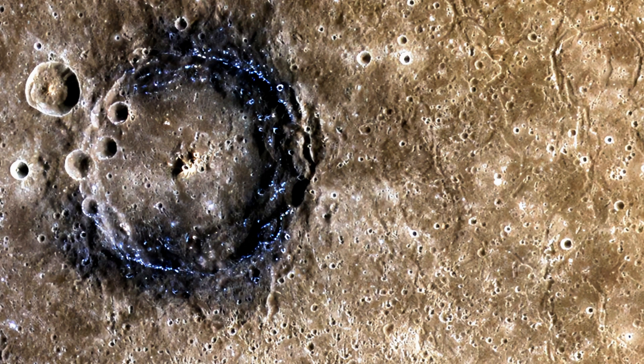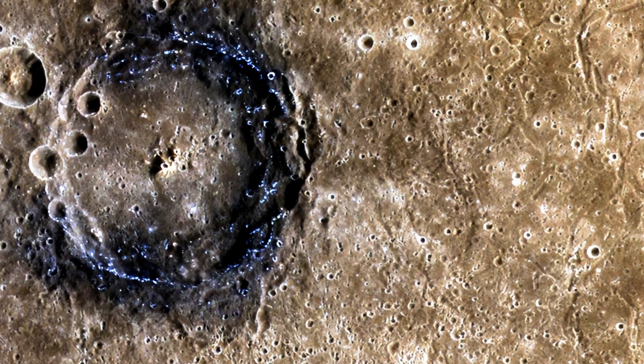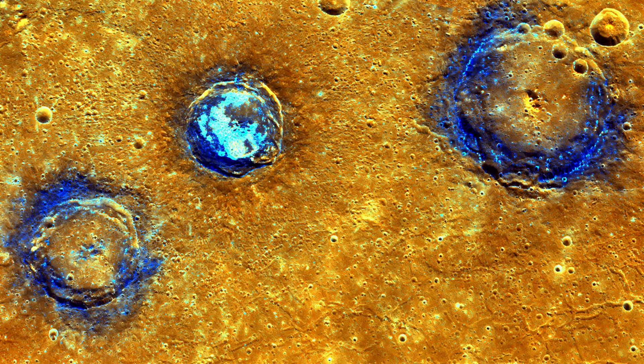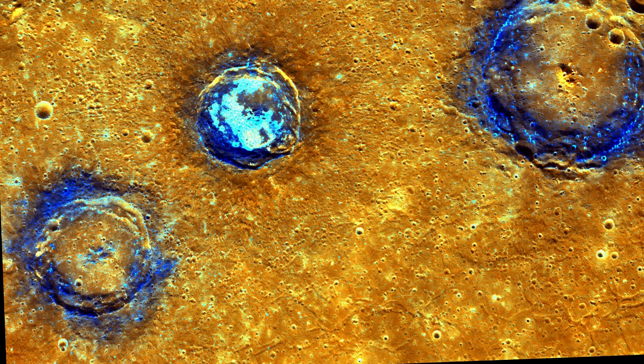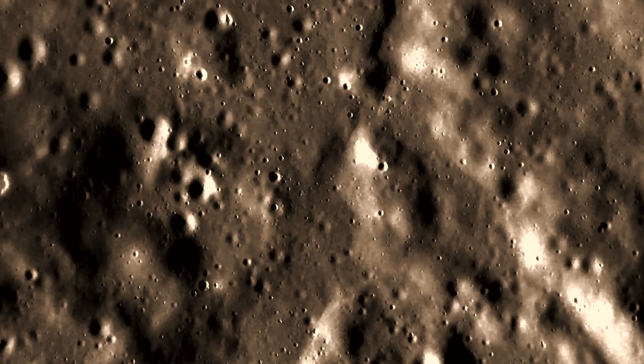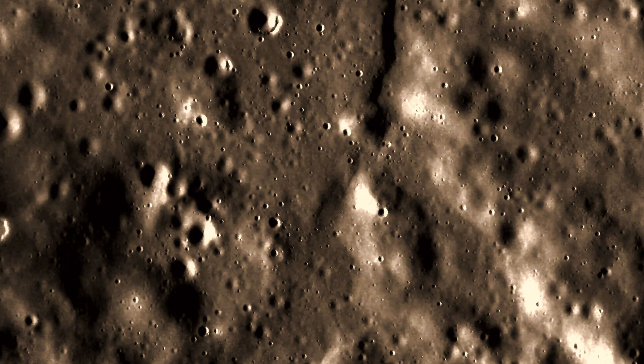NASA's MESSENGER spacecraft uncovered peculiar hollows scattered across Mercury's surface. Orbital images revealed thousands of irregular depressions, marked by uneven terrain, spanning up to a mile 1,600 meters in width and plunging as deep as 120 feet 37 meters.